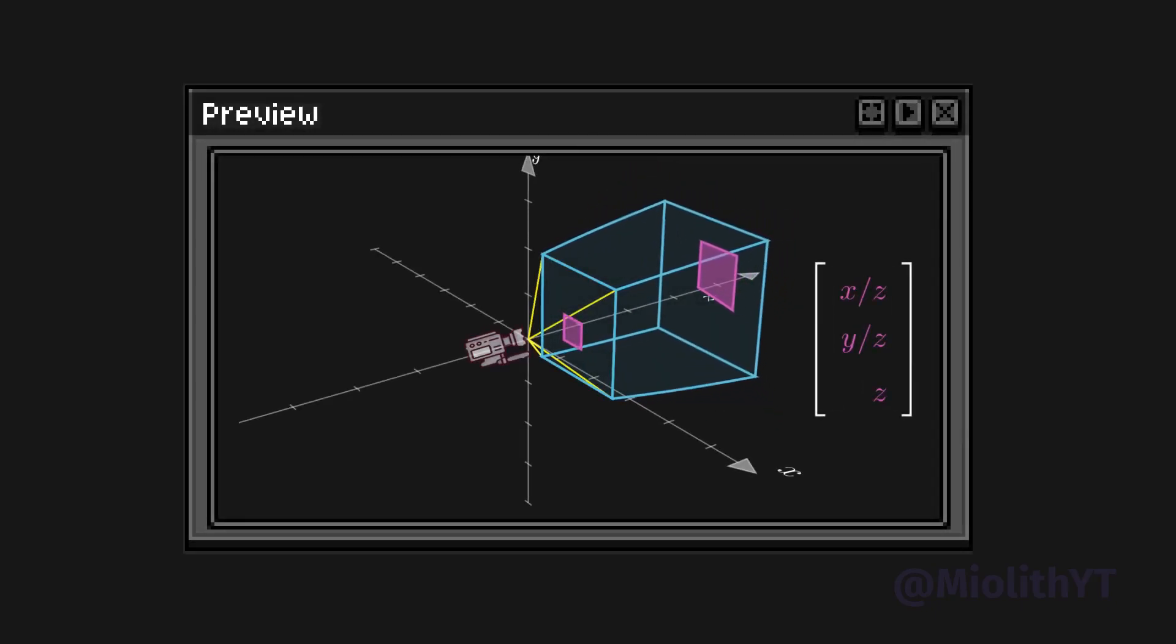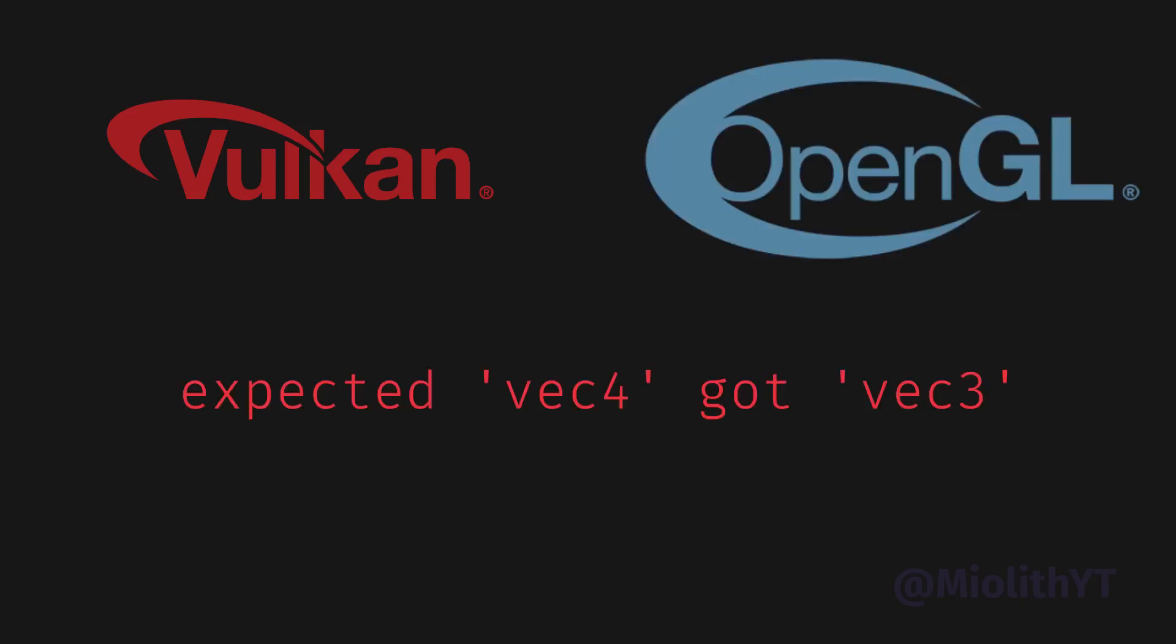Ok, but why bother with this extra component then? This is what we call the homogeneous coordinate system, and it's probably more useful than you may think in the first place, and there's a beautiful reason why it's used in computer graphics and why graphics libraries like Vulkan and OpenGL force you to use it.